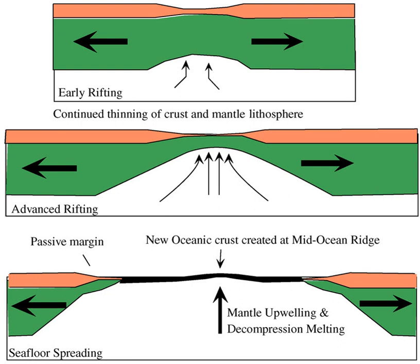Sediment-starved margins produce narrow continental shelves and passive margins. This is especially common in arid regions where there is little transport of sediment by rivers or redistribution by longshore currents. The Red Sea is a good example of a sediment-starved passive margin.